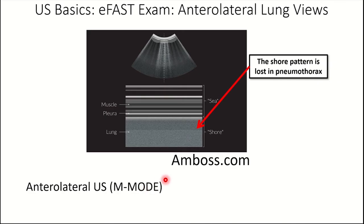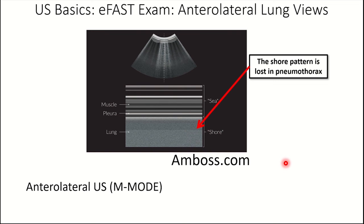That was all in B mode. Now we move to M mode — motion mode ultrasound. The parietal pleura and structures superficial to it, like skin and muscle, are stationary and appear as parallel lines of varying echogenicity. Here's the muscle, skin, pleura, and then lung. The visceral pleura and underlying lung move with respiration and appear grainy on M mode — a granular, TV static appearance resembling sand on the shore, while the parallel lines represent sea waves. This seashore appearance is normal.